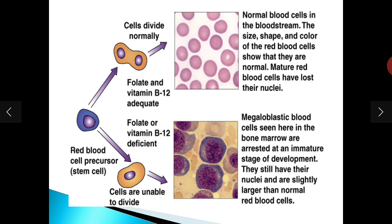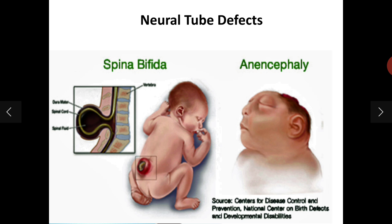This picture shows normal cells above and megaloblastic cells below — due to deficiency of folic acid or vitamin B12. Megaloblastic cells are precursors of RBCs, and due to deficiency of folic acid, there is no maturation of RBCs. Neural tube defects are also shown — spina bifida where the spine develops outside the body, and anencephaly where the skull and brain are missing.